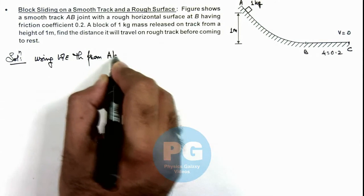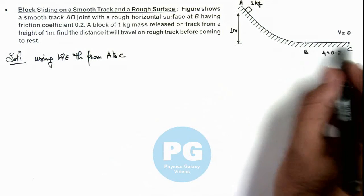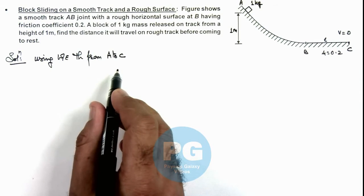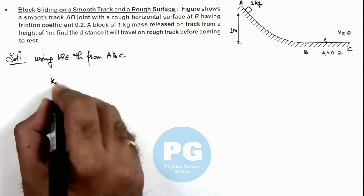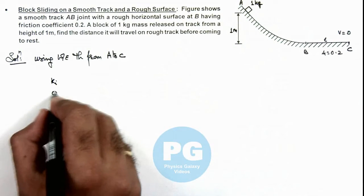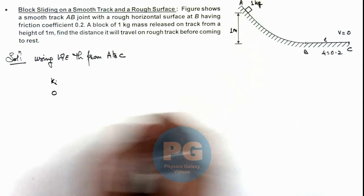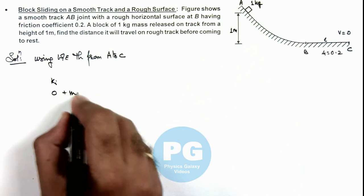From A to C, and if this distance from B to C is taken as l, then in this situation we can write initial kinetic energy at point A was zero. As it has displaced due to gravity by a distance 1 meter, work done by gravity is mgh.